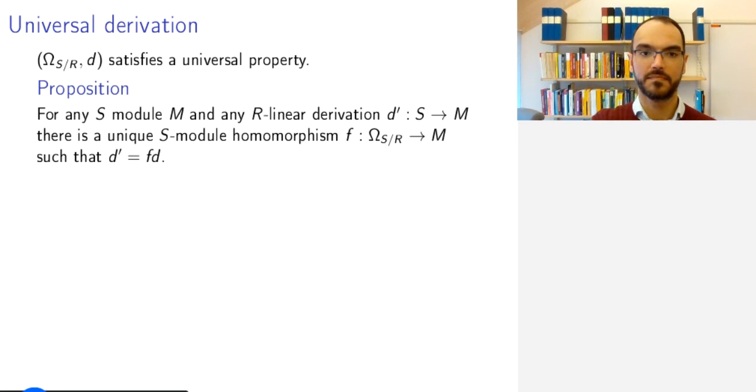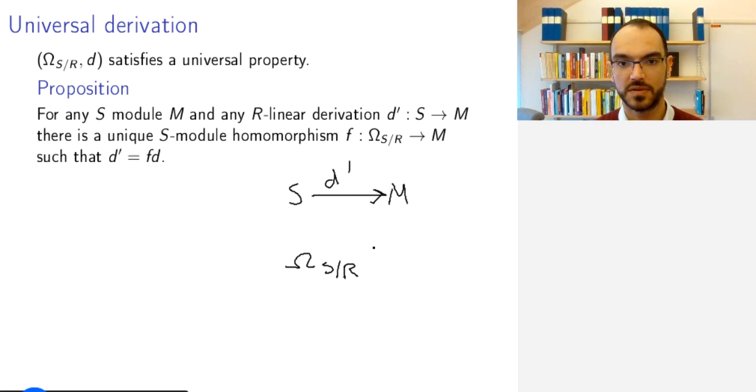If I have any S-module M and any R-linear derivation D' from S to M, then there is a unique homomorphism of S-modules from the module of Kähler differentials to M such that the following diagram commutes.